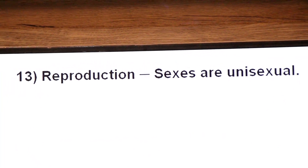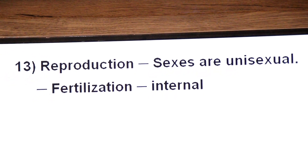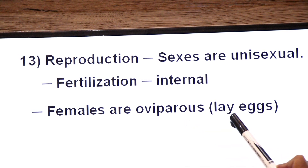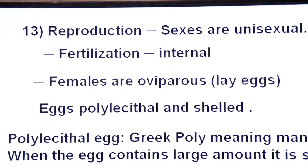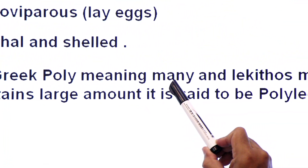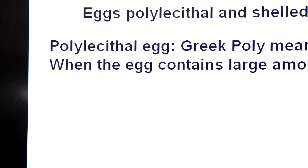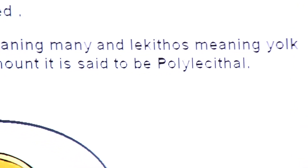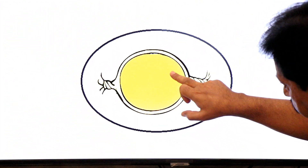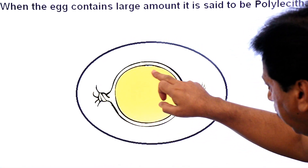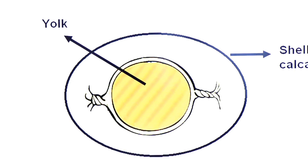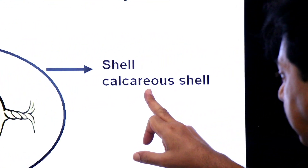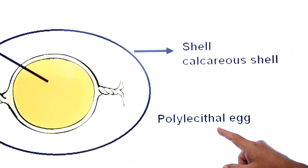Reproduction: sexes are unisexual, meaning sexes are separated. Fertilization is internal, and females are oviparous — they lay eggs. The eggs are polylecithal, meaning they contain a large amount of yolk ('poly' meaning many, 'lekythos' meaning yolk), and they are covered by a calcareous shell made of calcium carbonate.